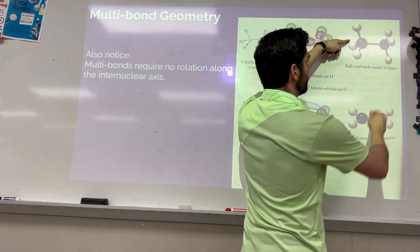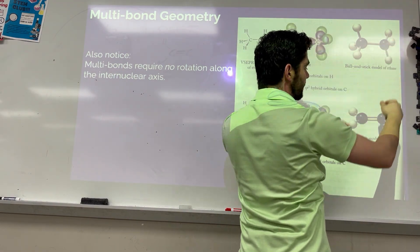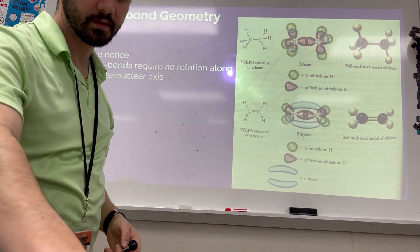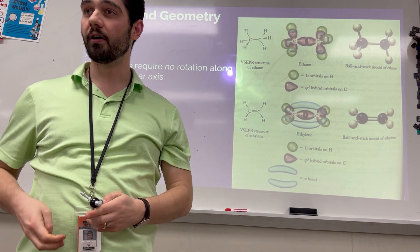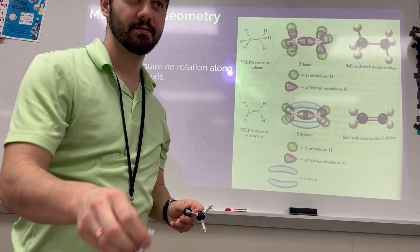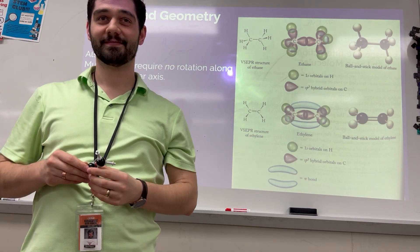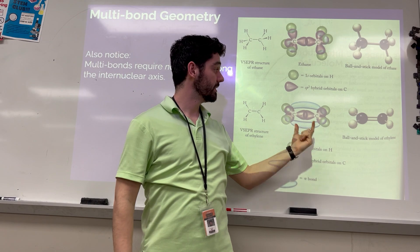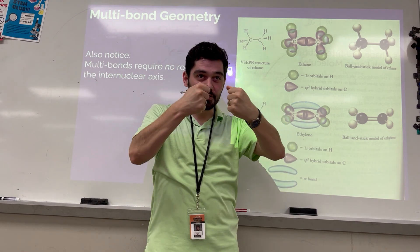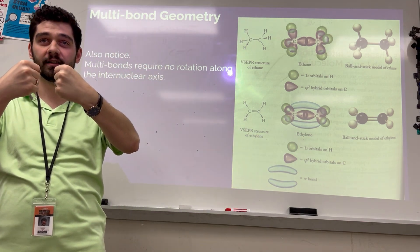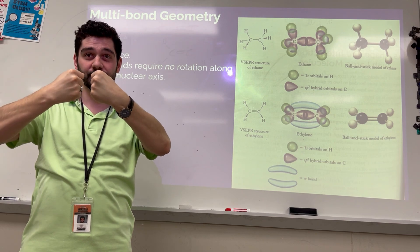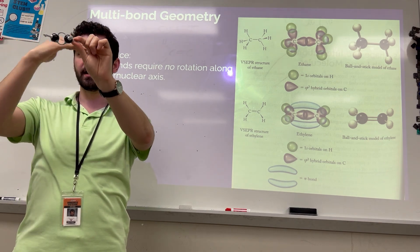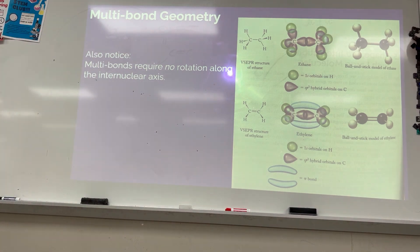So: multi-bonds — double bonds and triple bonds — do not rotate, whereas single bonds can and do rotate. In a single-bonded molecule, the hydrogens can spin like propellers. In ethylene with a double bond, notice how the bonds are all in the same plane. Multi-bonds are shorter, more secure, don't rotate, and are stronger — the atoms are cinched closer together.